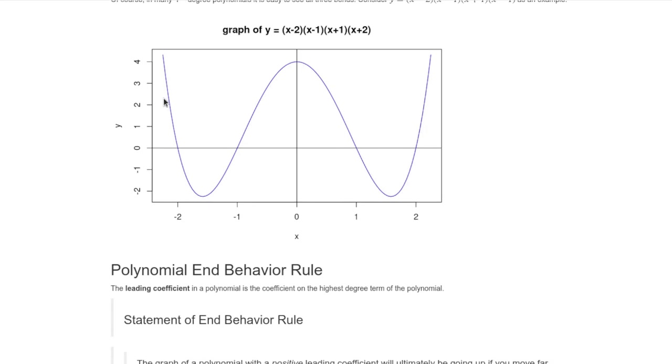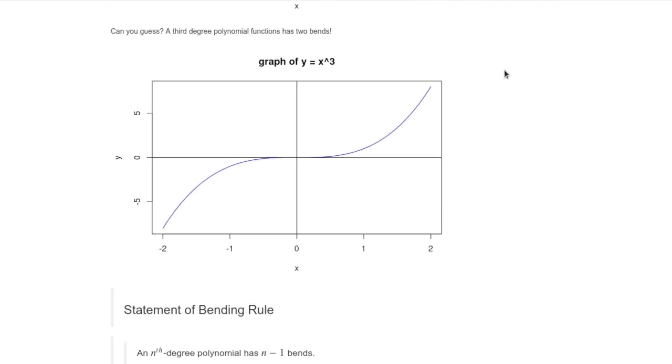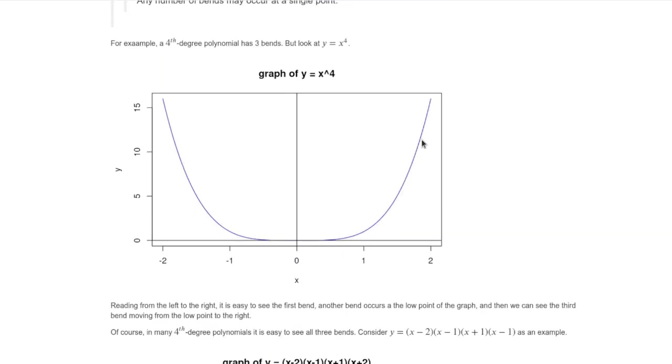The second big thing that you should know is what the end behavior is. If you look at the leading coefficient, that's the coefficient on the highest degree, that in the end, when you move over here far to the right, then the function will, if the leading coefficient is positive, it will be going up. The combination of knowing that bending rule and that end behavior rule gives you a lot of feel for what the graph of a polynomial function is going to be.